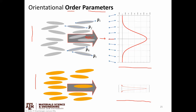The director is a vector pointing in the average direction — the combined average direction that all these individual mesogens are pointing. For any individual molecule, the vector along the long axis of that molecule does not have to point exactly in the same direction as the director. There's some offset angle theta that describes the angle between a particular mesogen — let's call him Bob — and the average direction.